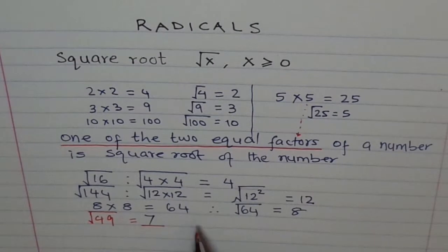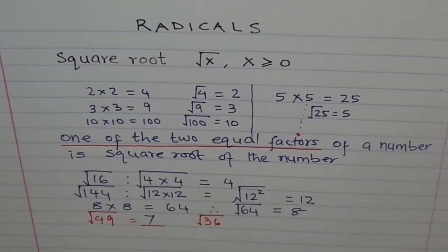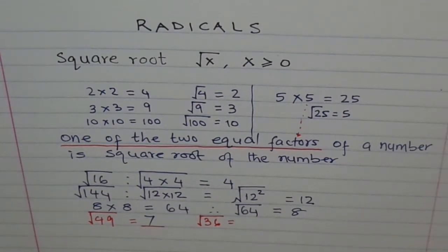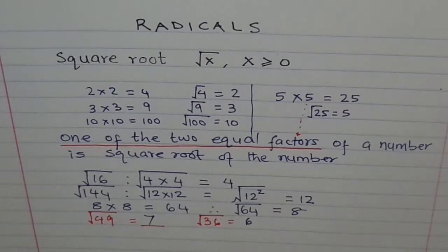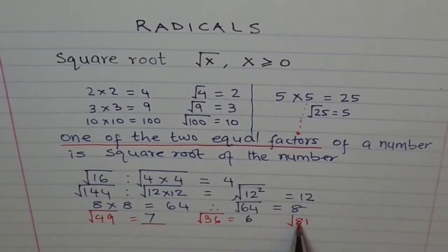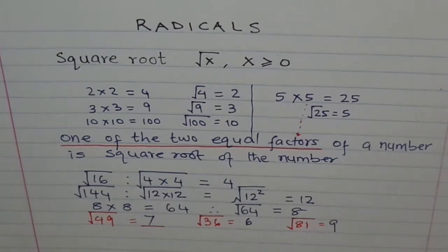How about square root of 36? 4 times 9 is 36 — but that doesn't work. 6 times 6, so it is 6. And square root of 81: 9 times 9 is 81, so square root of 81 is 9. That is how we find square root.